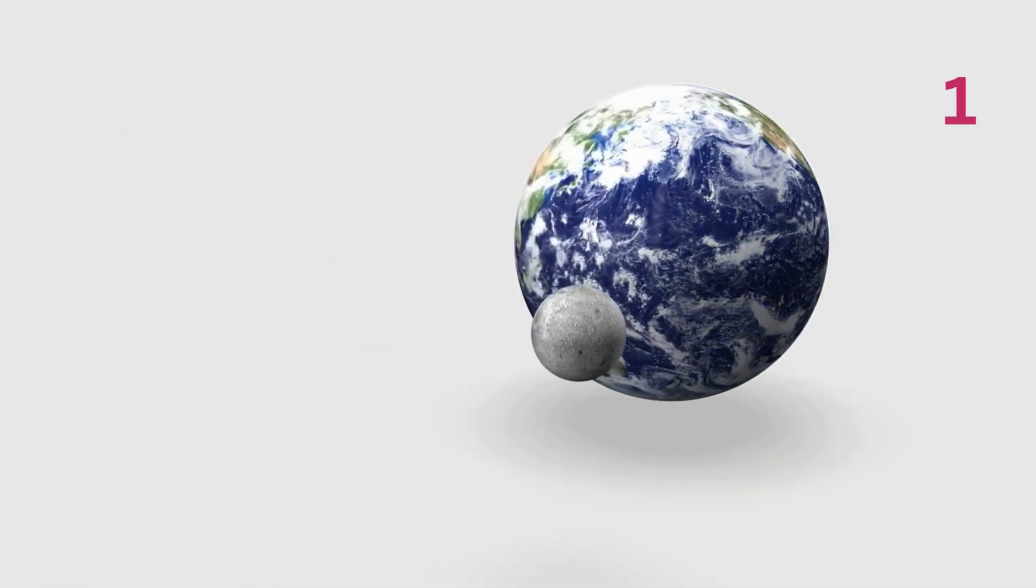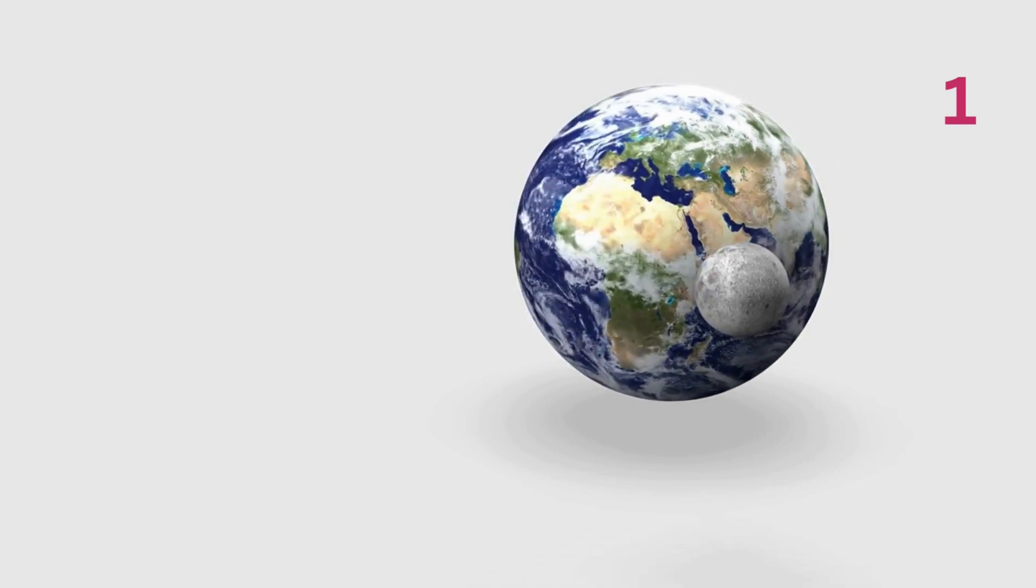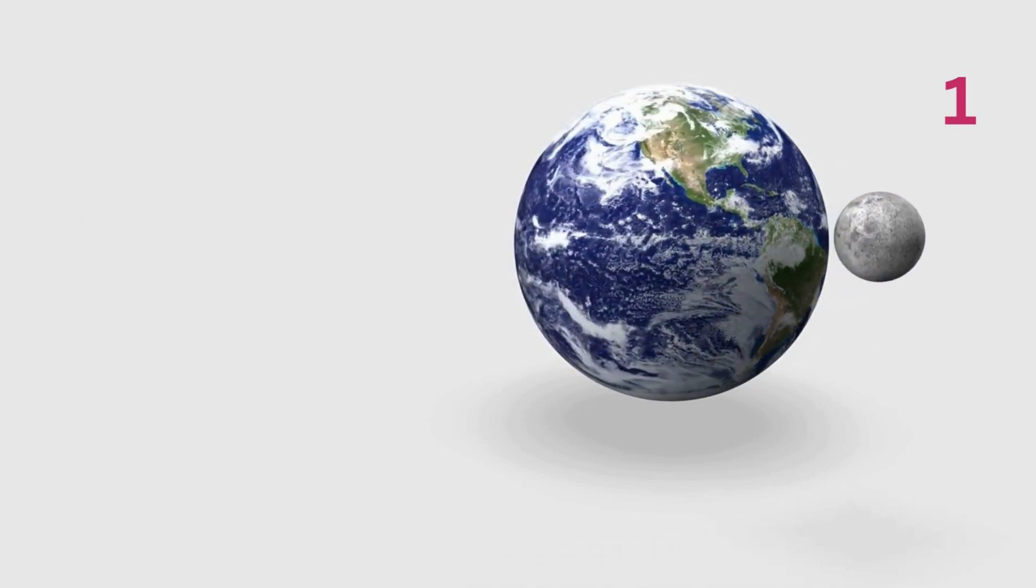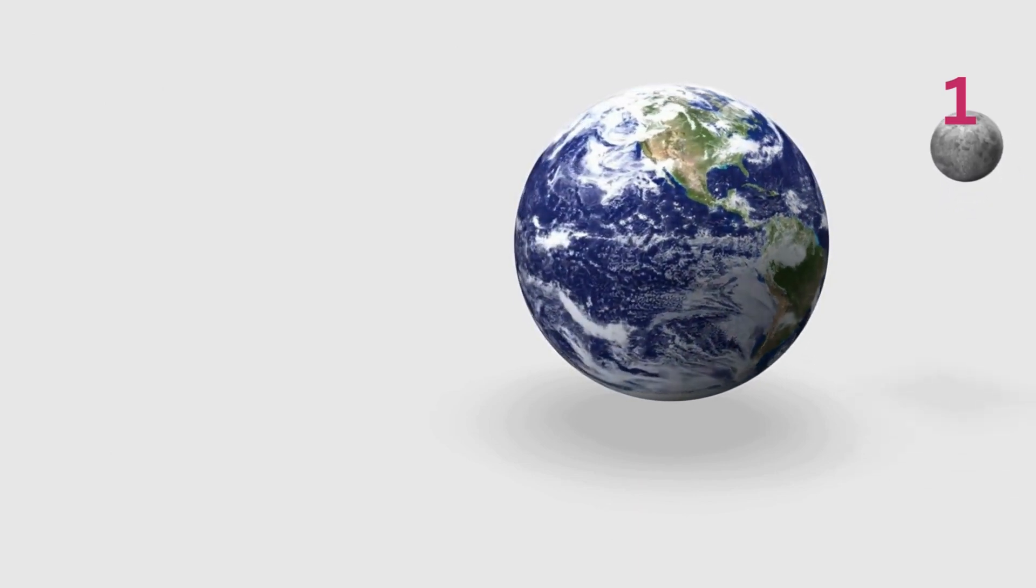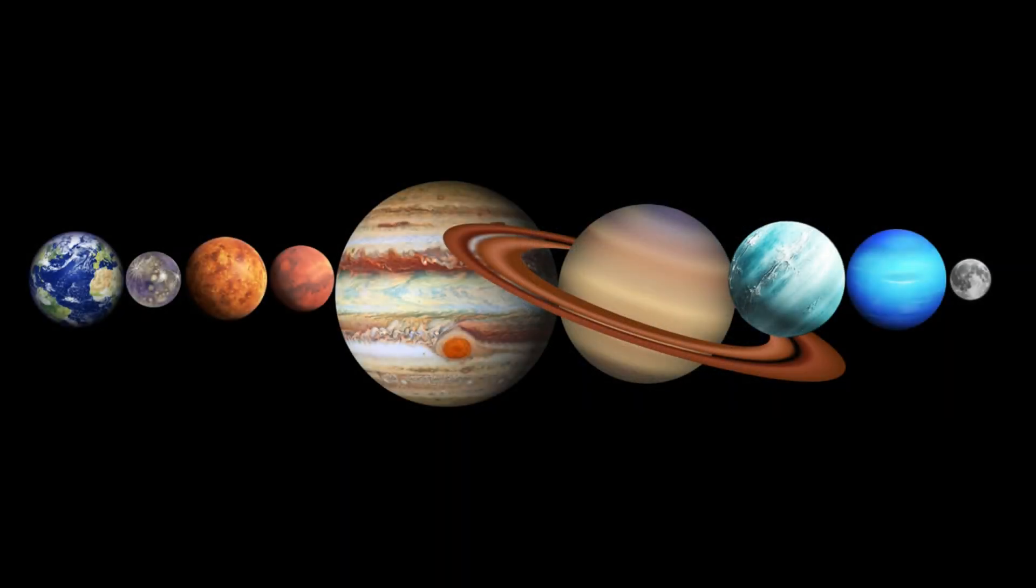Our first cool fact has to do with how far the moon is from the Earth. When we look up at the moon at night, it looks like it's pretty close to us. But, you could actually fit all the planets between the Earth and the moon if you were to line them up in a row. That's how far the moon is away from the Earth.